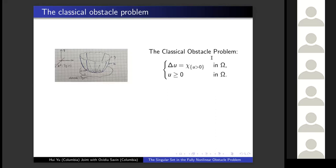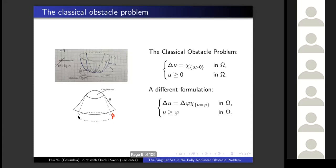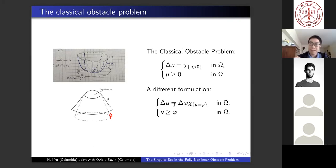Sometimes we see a different formulation. In this picture, the top function is the membrane and the bottom function is the obstacle, but now we are not pushing the membrane — the membrane is free. The obstacle itself is non-zero. The membrane has to be on top of the obstacle, so U has to be greater than or equal to phi. When they are in contact, they share the same Laplacian. Once they become detached, once U is strictly above phi, U is harmonic. This is a slightly different formulation of the same problem; to go back to the previous formulation, you just take the difference between U and phi.